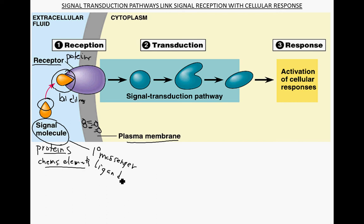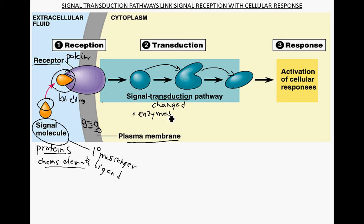That binding then sets off a signal transduction pathway. Transduction means the signal is in some way changed. Notice the signal molecule does not itself enter the cell, but the information — the signal — is transduced. The signal transduction pathway will often involve different molecules changing their shape, where one molecule causes another to change its shape, and so on.